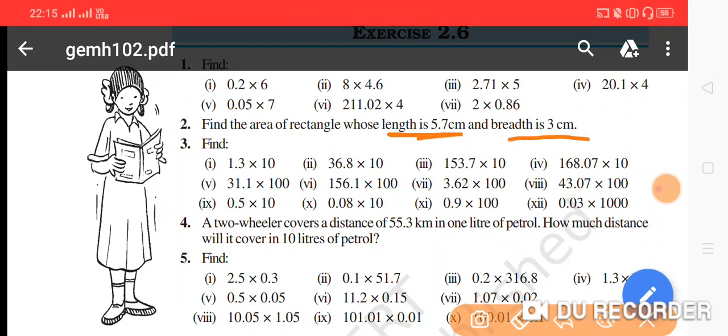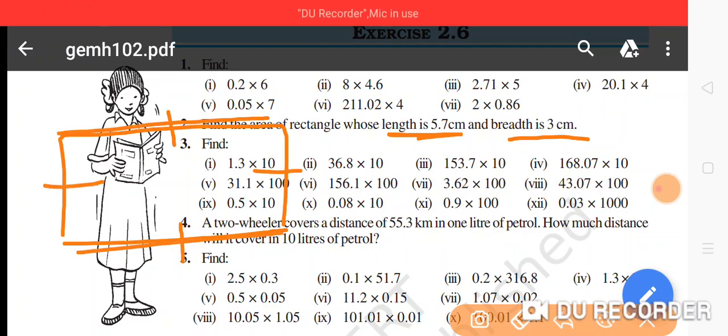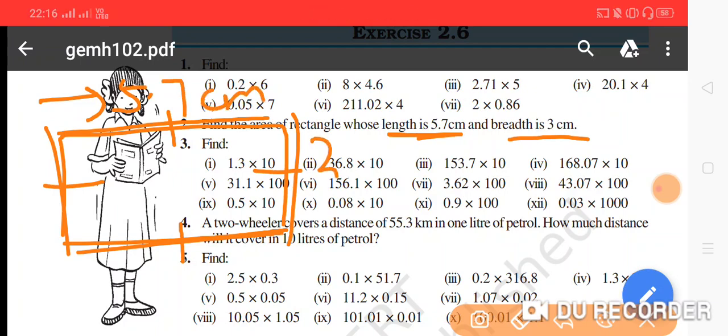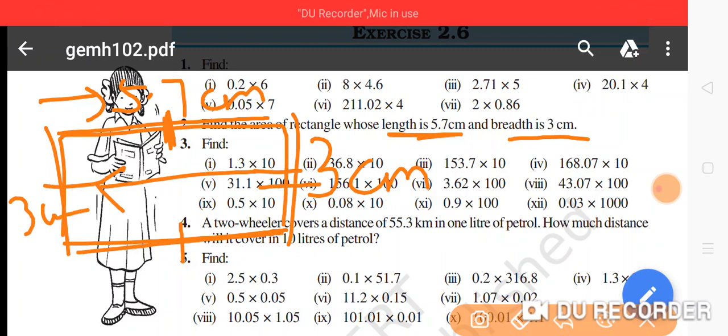We need to find the area of rectangle. We know that a rectangle is a shape whose opposite sides are equal to each other. This side equals this side, and this side equals that side. So the length is 5.7 centimeter and the breadth is 3 centimeter. When this side is 3 centimeter, that means this side is also 3 centimeter. And this is 5.7, so the opposite side is also 5.7 centimeter.